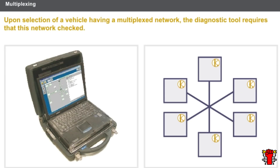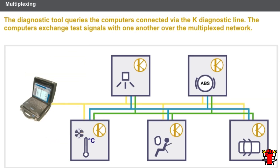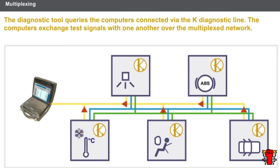Upon selection of a vehicle having a multiplexed network, the diagnostic tool requires that this network be checked. If it is impossible to carry out this check correctly, then there is a serious electrical problem. Following checking of the multiplexed network, the diagnostic tool indicates the problems detected on a diagram. On certain vehicles, the diagnostic tool queries the computers connected via the K-diagnostic line. The computers exchange test signals with one another over the multiplexed network, then send their results to the diagnostic tool via the K-diagnostic line.